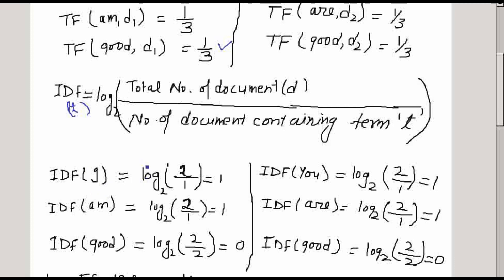For term 'I', we compute log base 2 of 2/1. The total number of documents is 2 (D1 and D2), and 'I' appears in only one document, so IDF equals log base 2 of 2, which is 1. Likewise, we calculate the IDF for 'am', which is again 1 because 'am' appears in only one document out of two.